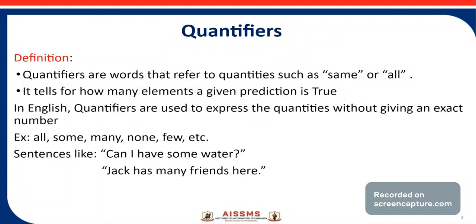Quantifiers are words that refer to quantities such as 'some' or 'all'. It tells for how many elements a given predicate is true. In English, we can say quantifiers are used to express quantities without giving an exact number.